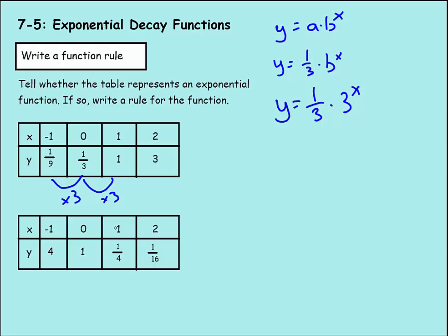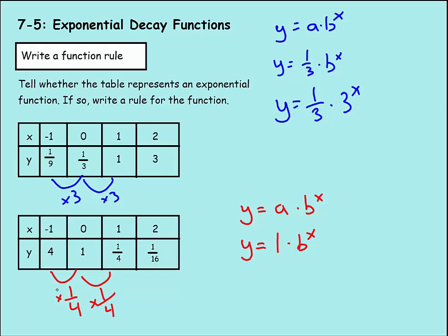For the next function, as the powers go up I notice the numbers are going down — decaying. Same formula: y equals a times b to the x power. Solving for a at the zero power: 1 times a equals 1, so a equals 1. Then b is the amount of change each power — I notice we're multiplying by 1 fourth, or dividing by 4. So b equals 1 fourth, giving us y equals 1 fourth to the x power.